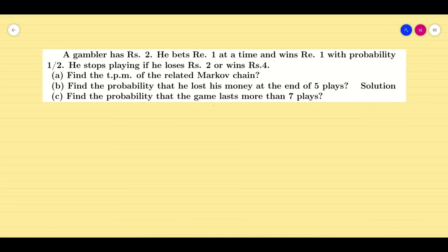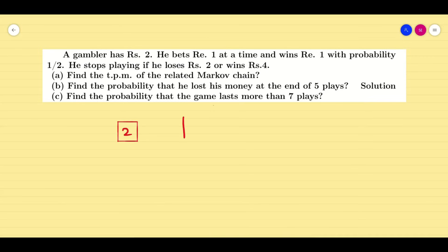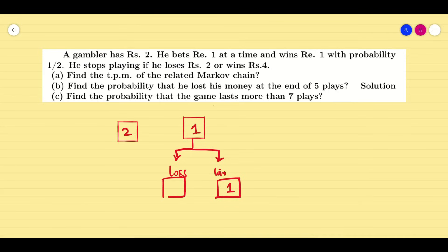Dear friends, I am very happy to meet you in the next video — a very interesting video on the Gambler Problem. There is a gambler who has 2 rupees in his hand. He is going to bet 1 rupee in the game, so he may lose or he may win. If he wins, he will gain 1 more rupee. If he loses, he will lose the 1 rupee he bet. The probability of winning or losing is 1/2 — 50-50.